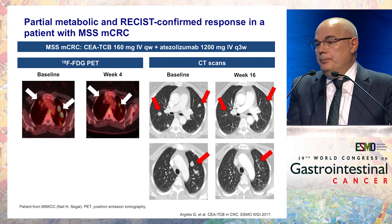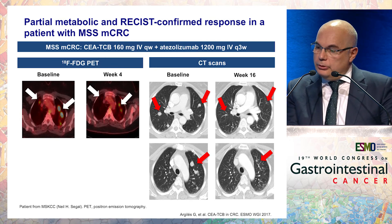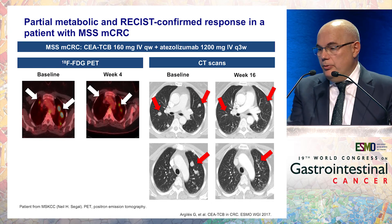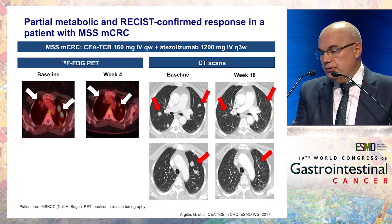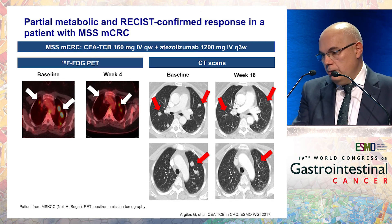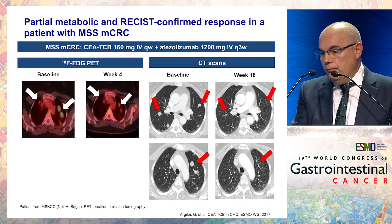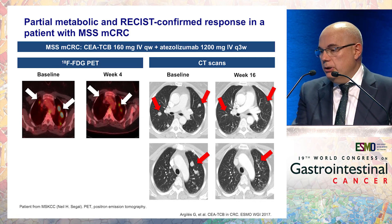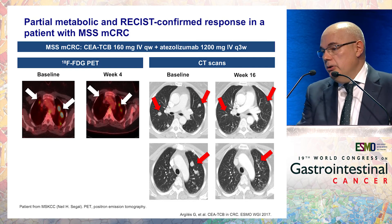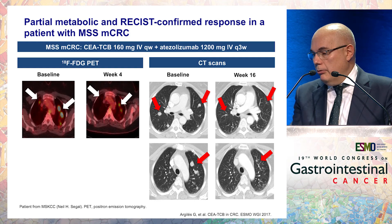This is how the response in a patient with an MSS metastatic colorectal cancer looks with this combination. On the left you can see PET scans showing a dramatic partial metabolic response at week 4 compared to the baseline. More importantly, looking at the conventional CT scans, there is an impressive partial response — almost a complete response — in lung metastases from colorectal cancer. This is really very impressive.